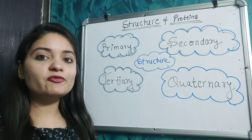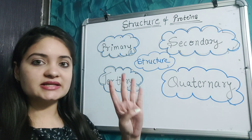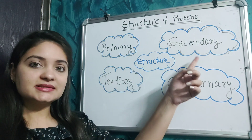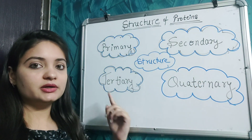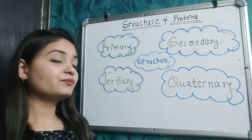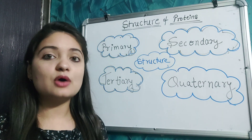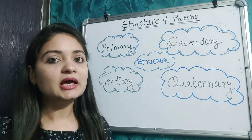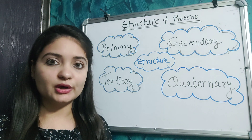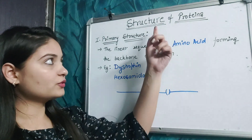The structure of protein is divided into four categories: primary, secondary, tertiary, and quaternary. We will discuss each structure of protein in detail.